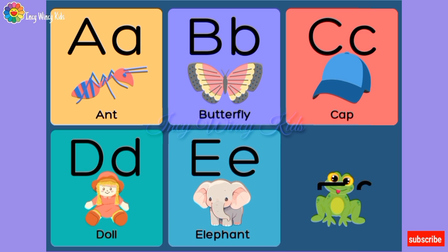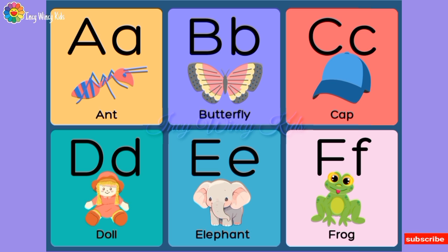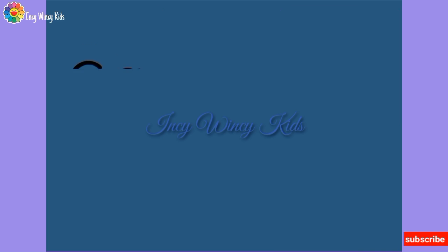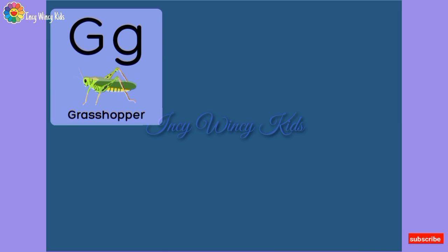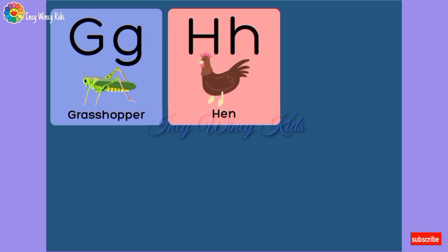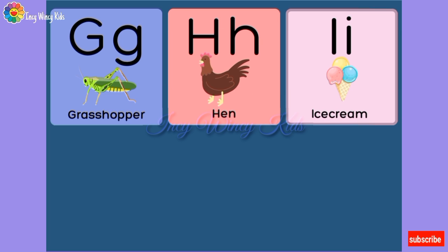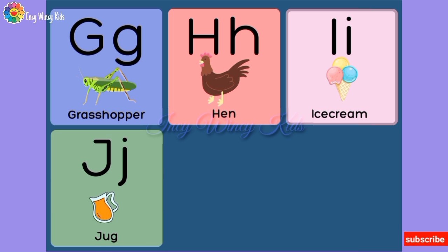E — Elephant. F — Frog. G — Grasshopper. H — Hen. I — Ice Cream.